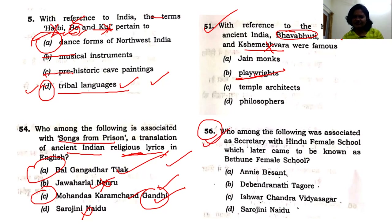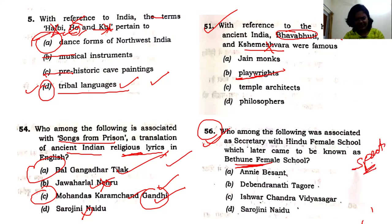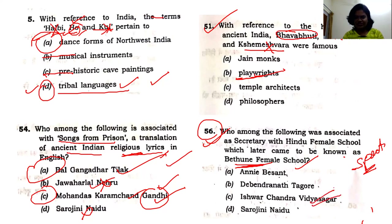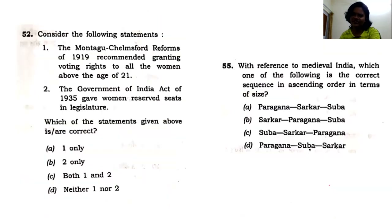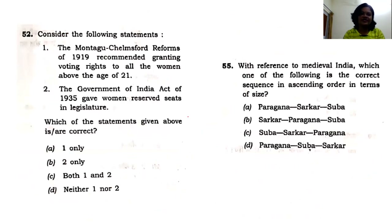The 56th question: without even reading through all the options, you can find 'Bhavabhuti Female School' here. This is directly lifted from the Spectrum book. After your examination, go back and you'll find that Bhavabhuti Female School was established and he became the secretary. Bhavabhuti here is none other than Ishwar Chandra Vidyasagar. It's a very direct question with no ambiguity.